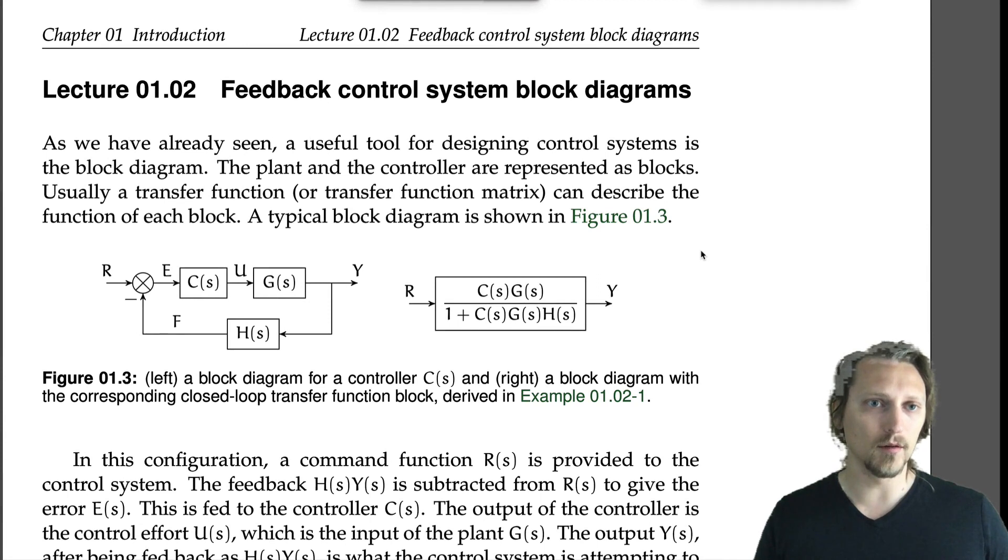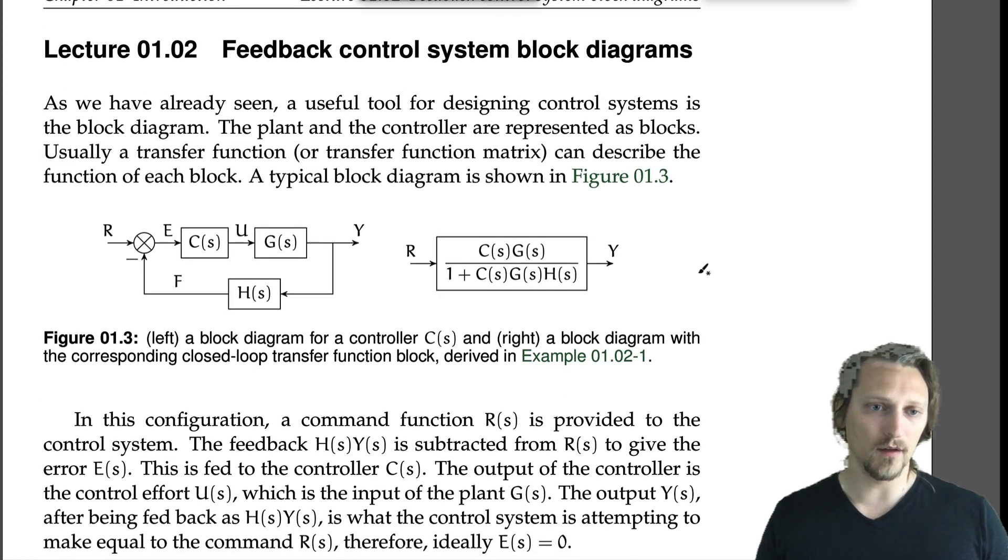Lecture 1.2: Feedback control system block diagrams. As we have already seen, a useful tool for designing control systems is the block diagram. The plant and the controller are represented as blocks, usually a transfer function or transfer function matrix can describe the function of each block. A typical block diagram is shown in Figure 1.3.